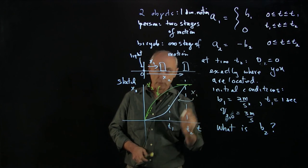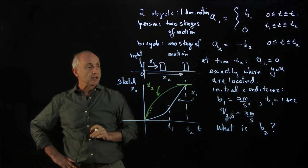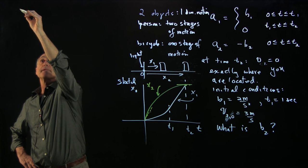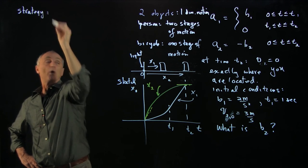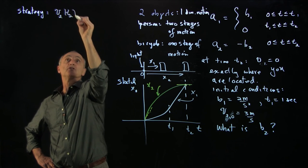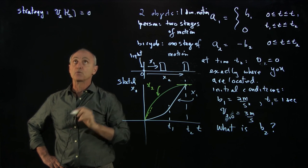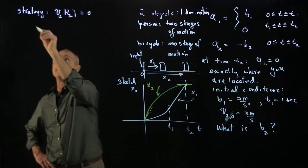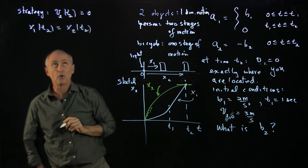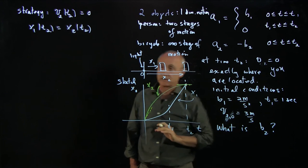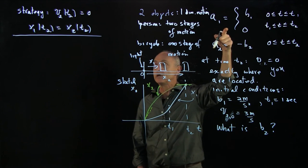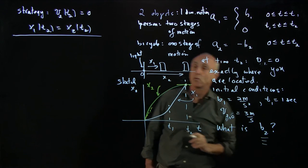To build a strategy, we can look at our graph and identify special conditions from our initial information. Our strategy will be: first, figure out what time t2 is — we know the bicyclist has come to a stop at t2. And we also know that the bicyclist comes to a stop exactly at the same position as the person, so x1(t2) equals x2(t2). Those are two conditions we can deduce from the given information.